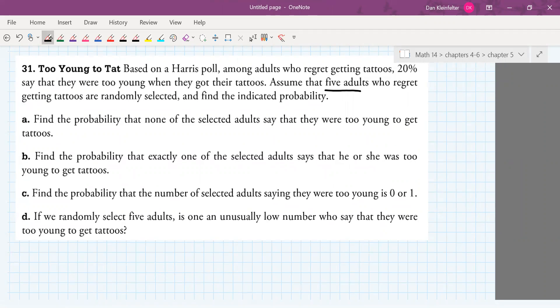So let's take a look at the problem. So it says, based on a Harris poll, among adults who regret getting tattoos, 20% say they were too young when they got their tattoos. Assume that five adults who regret getting tattoos are randomly selected and find the indicated probability. So first, we want to find the probability that none of the adults say they were too young to get tattoos.